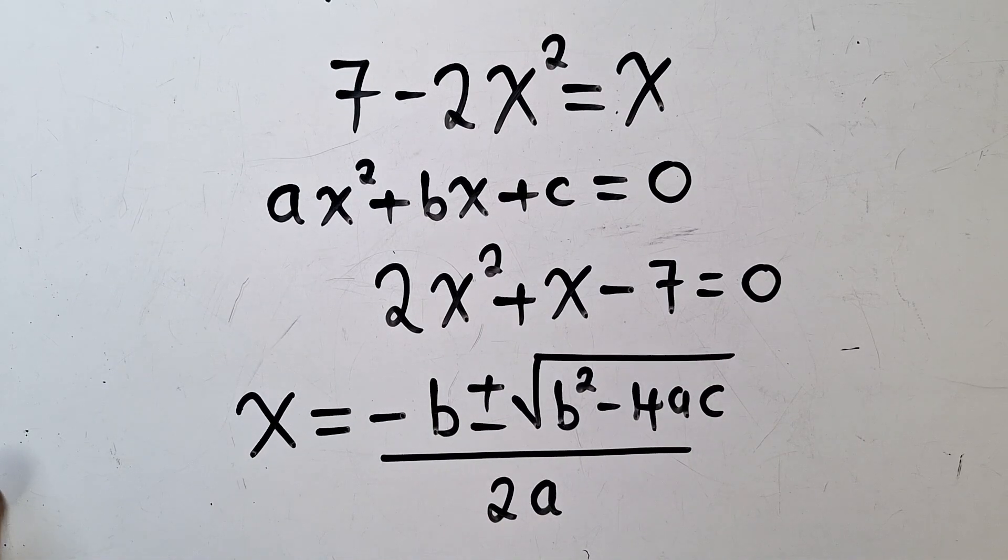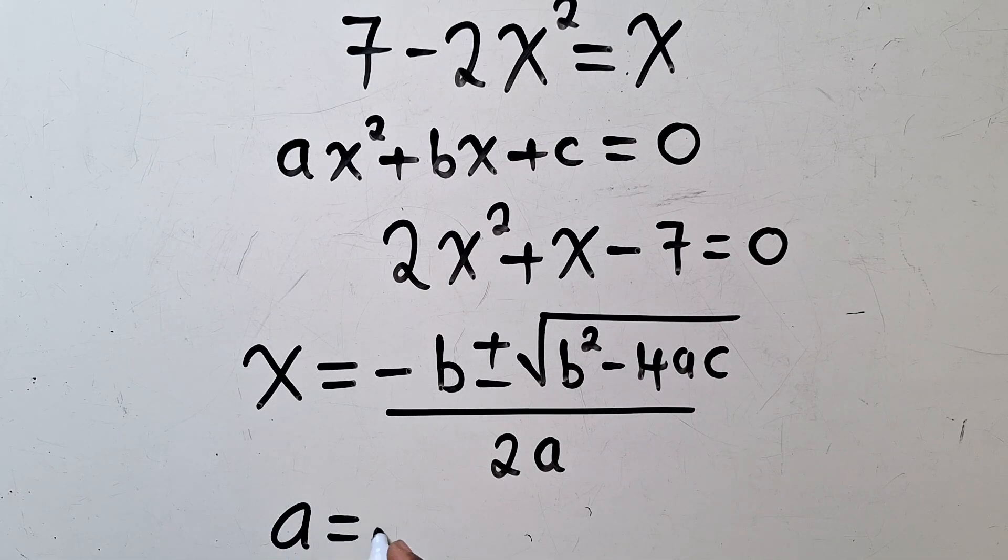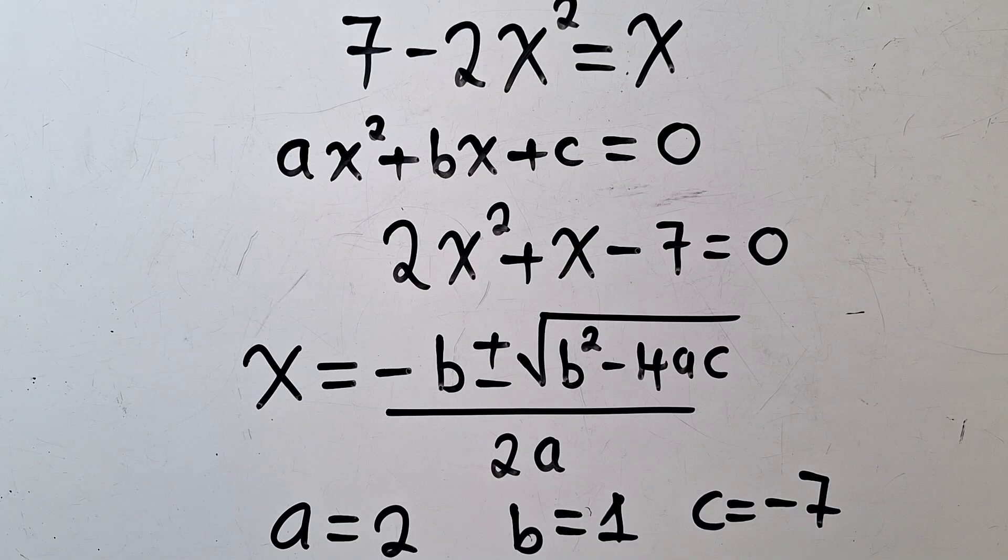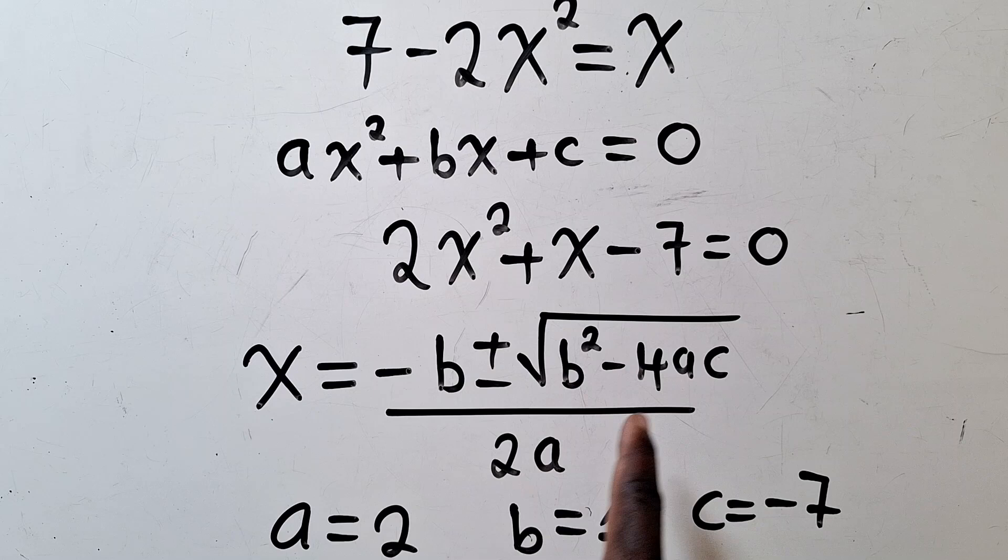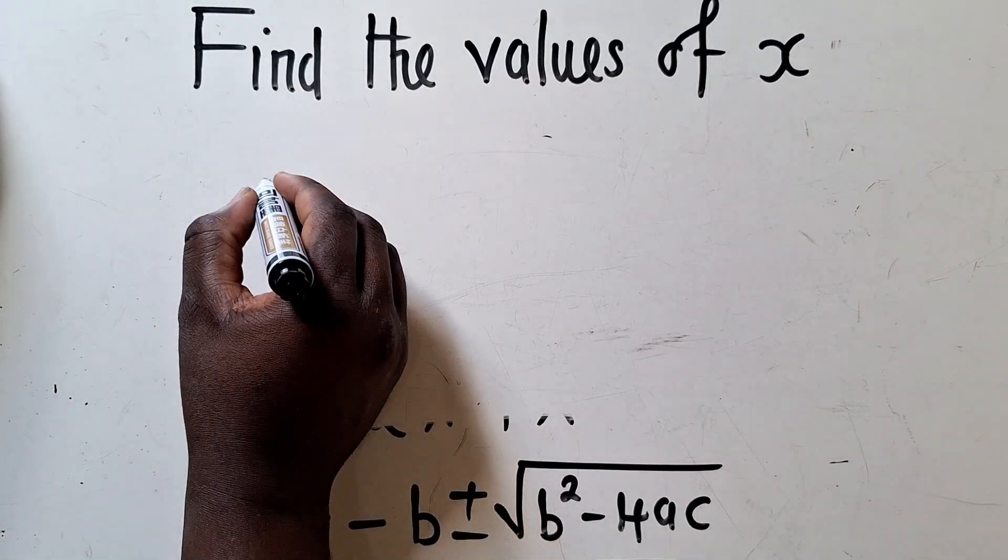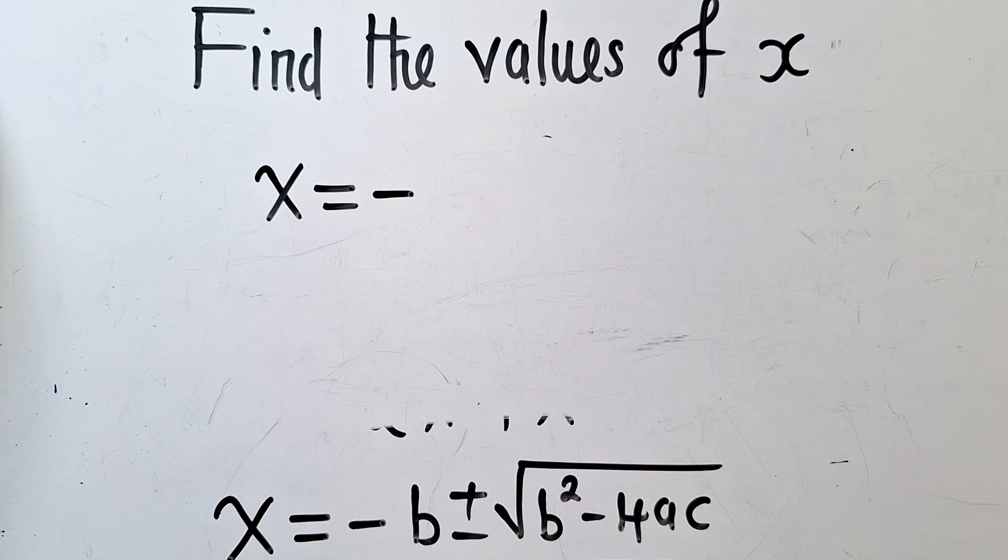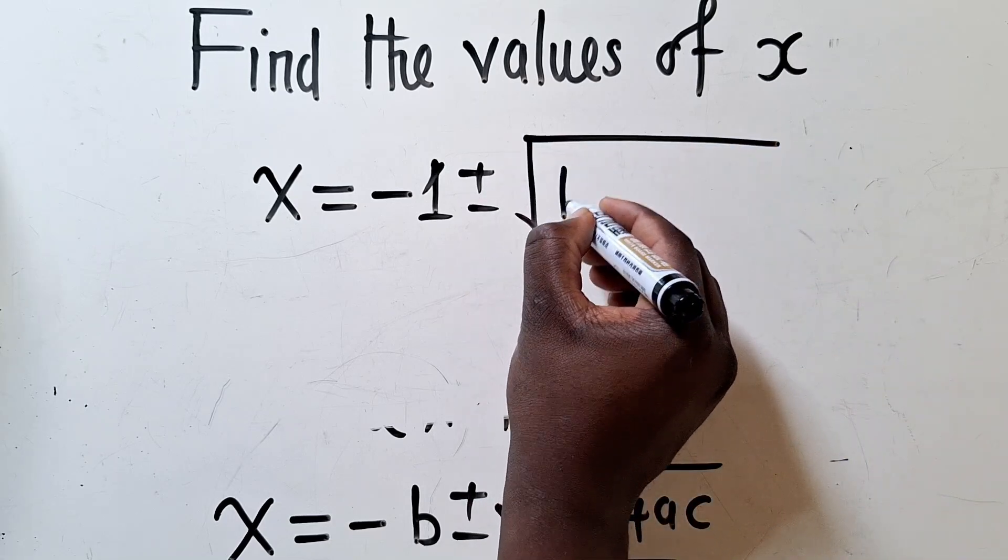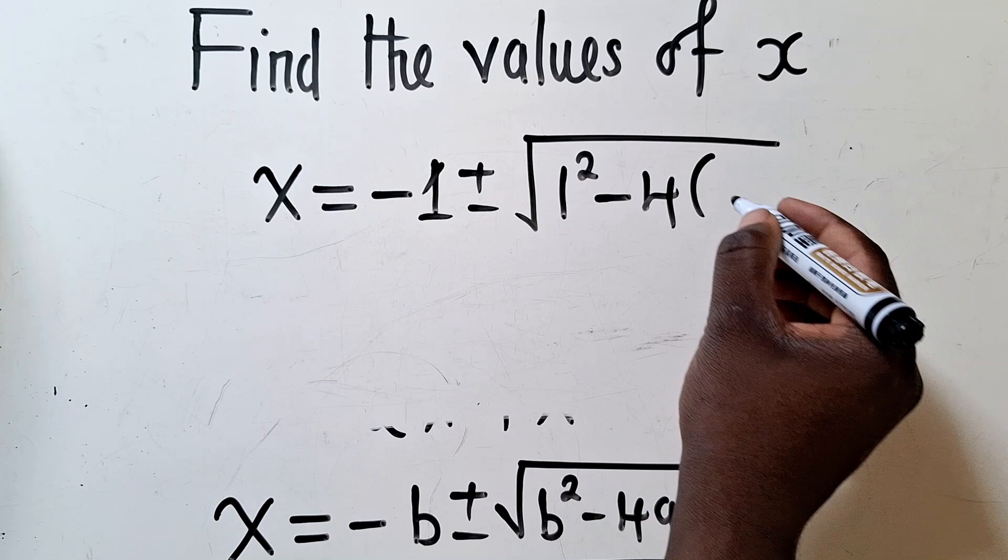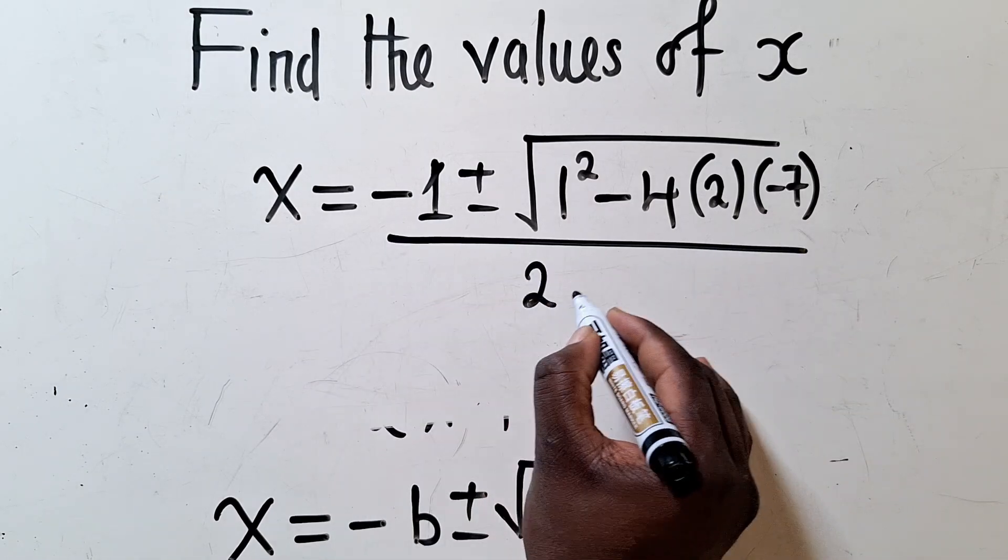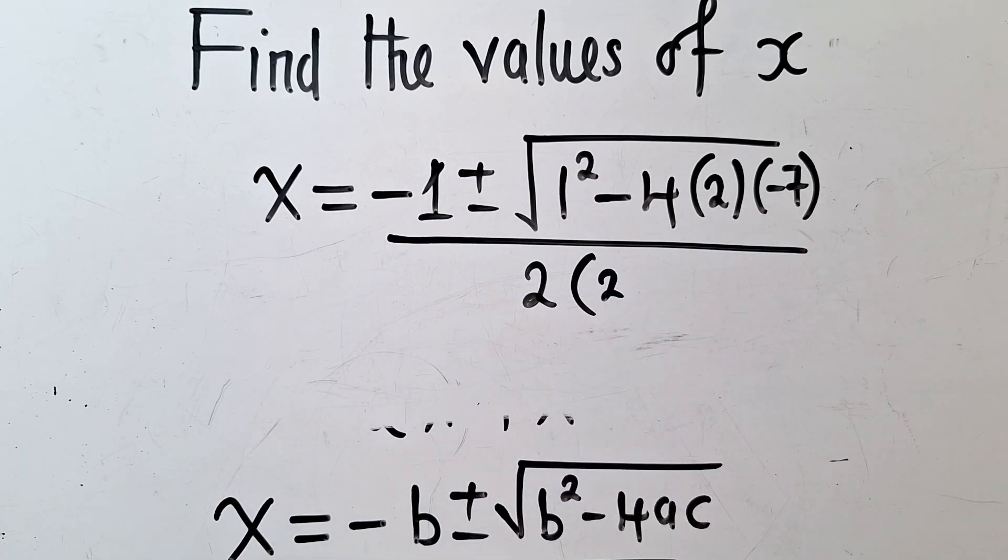Let me list them here. a is equal to 2, the coefficient which is right here. b is equal to 1. c is negative 7. So our job will just be to plug in the formula. x is equal to negative b, we know that it's 1, plus or minus square root over 1 squared minus 4. a is 2, and c is negative 7. We say over 2, a is 2.